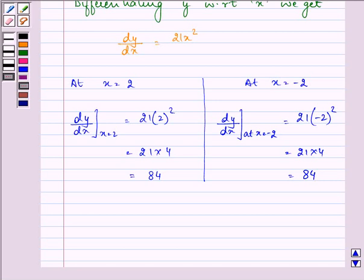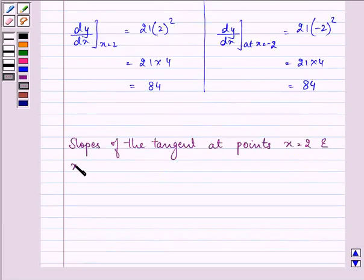Now we can see that the slopes of the tangent at points x = 2 and x = -2 are the same.